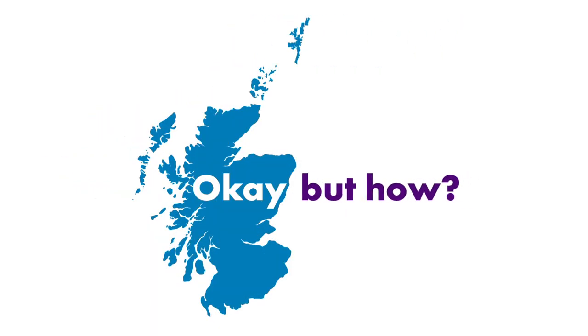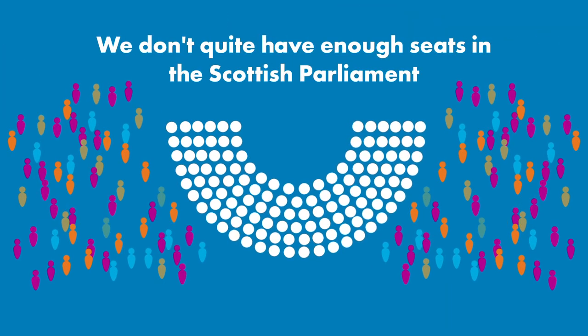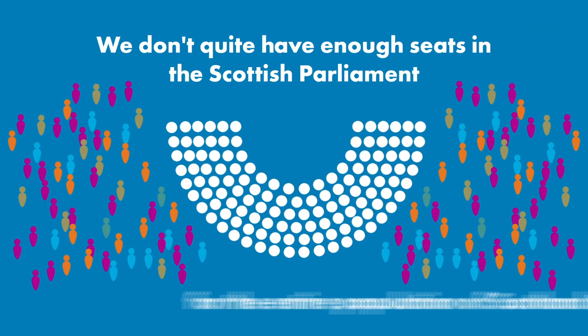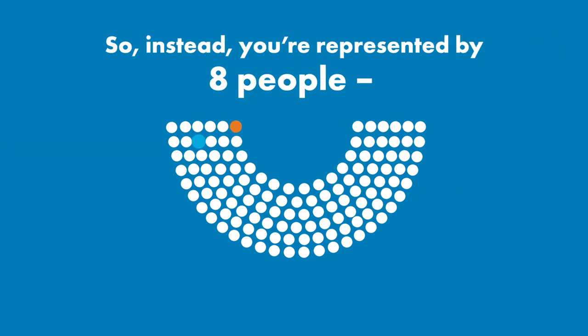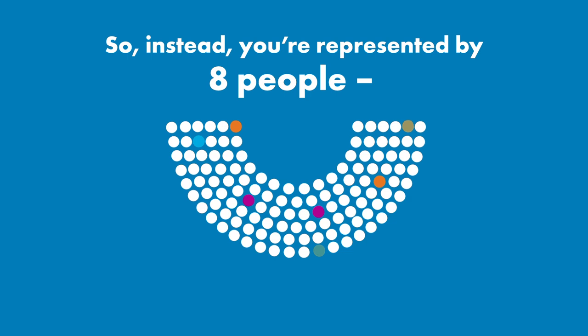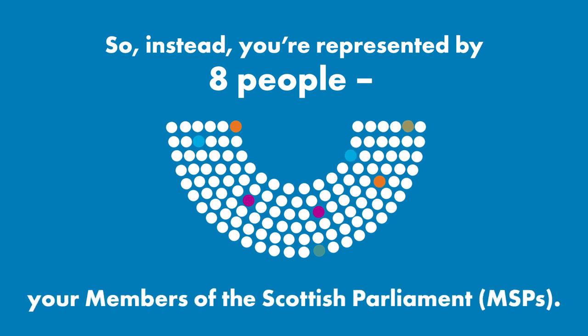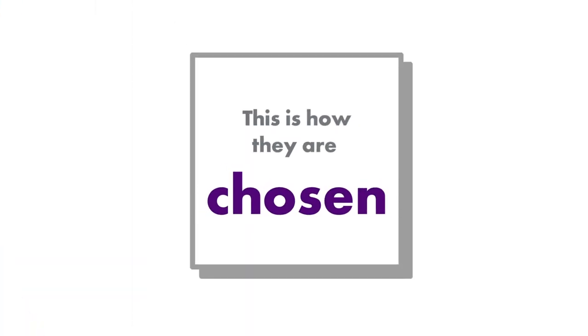But how? We don't have quite enough seats in the Scottish Parliament for the entire population of Scotland to fit. So instead, you're represented by eight people — your members of the Scottish Parliament. This is how they are chosen.